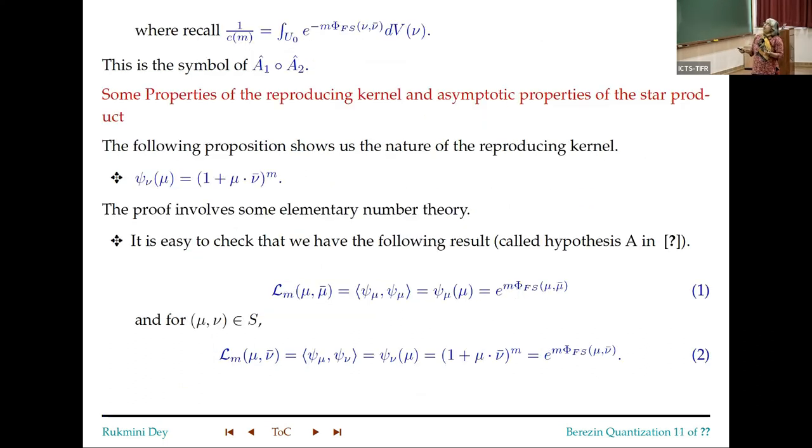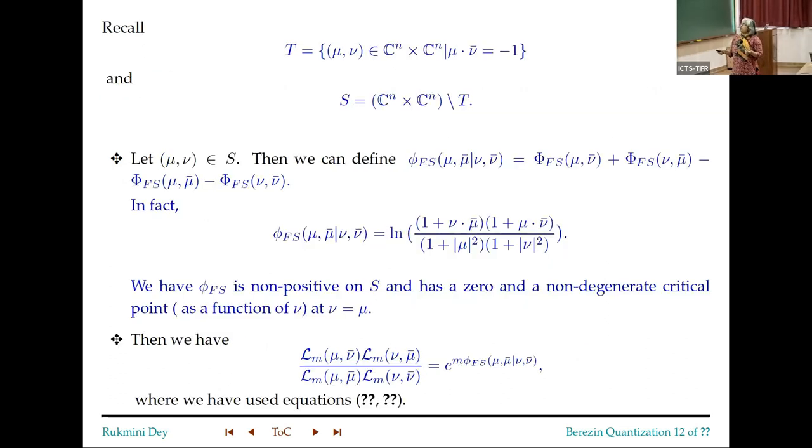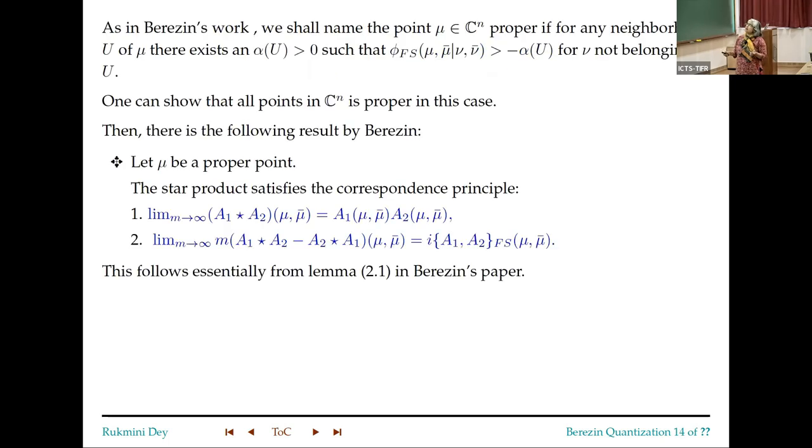And so you see the star product, everything here involves h-bar, because m was there everywhere, even the Hilbert space. So one beautiful thing we were able to show is, since μ·μ̄ is 1 plus μ·μ̄ to the power m. And using this fact, we are able to show this beautiful property of the star product. That limit m goes to infinity, that means h-bar goes to 0, A_1 star A_2(μ,μ̄) is A_1(μ,μ̄)A_2(μ,μ̄). So in the limit, the star product becomes the ordinary product. And the commutator, A_1 star A_2 minus A_2 star A_1, m times that is i times the Poisson bracket induced by the Fubini-Study. So this is the correspondence principle.